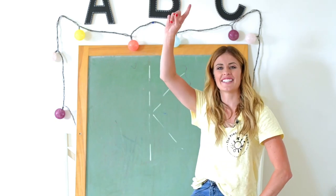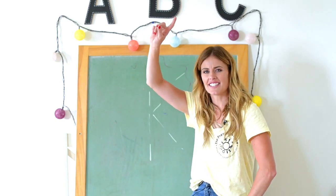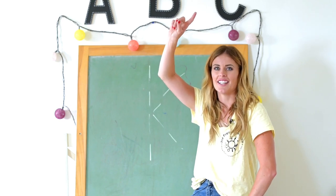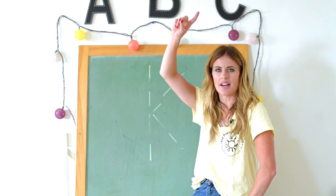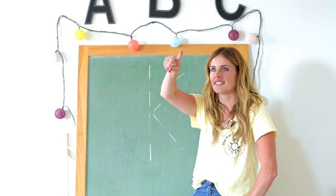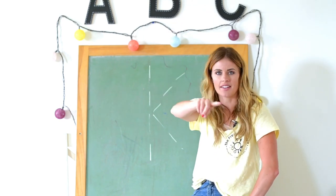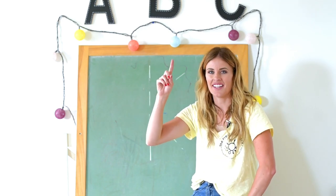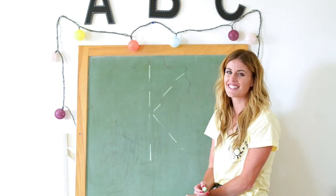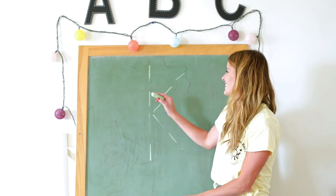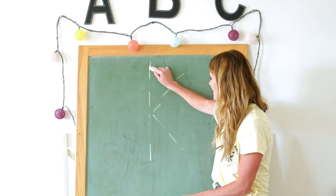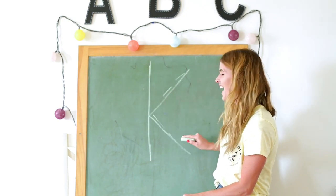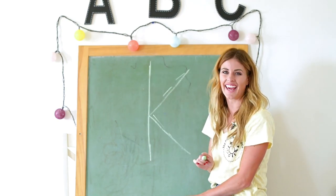Put your finger in the air. Let's talk like an Australian: good day, mate. Down, slant in, slant out K. That's fair dinkum. Now let's write the letter K: down, slant in, slant out K.